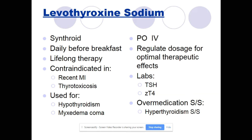Make sure IV levothyroxine is pushed very slowly, and regulate dosage for optimal therapeutic effects. Labs to check include TSH (thyroid-stimulating hormone) and free T4. Over-medication with this drug can cause hyperthyroidism. Signs and symptoms include arrhythmias, increased heart rate, MI, increased CHF symptoms, worsening diabetic control, CNS symptoms, dyspnea, GI symptoms, increased liver function studies, and seizures.